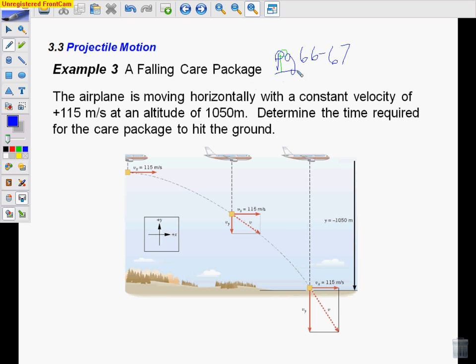If you want to follow along in your book or get more information, look there. So we had this plane that's flying along at 115 meters per second, horizontally.